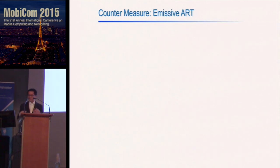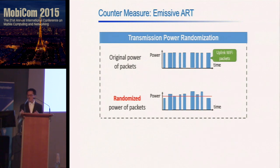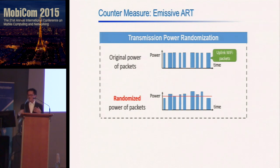For the emissive ART, the victim has better control over their device, so we designed a transmission power randomization scheme as a countermeasure. Since Wi-Fi originally transmits each packet with equal power, our idea is to randomize the power of each packet so that the attacker cannot effectively recover the audio from the RSS information.